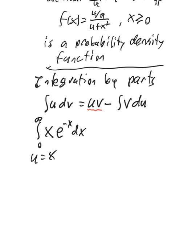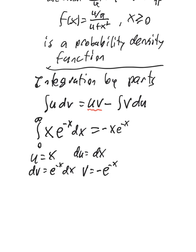Here's an example: the integral from 0 to infinity of x times e to the minus x dx. Generally when using integration by parts, let u be something that becomes simpler when you take the derivative, and let dv be the other part. So we let u equal x and dv equal e to the minus x dx. Then du is just dx, and v — the antiderivative of e to the minus x — is minus e to the minus x.